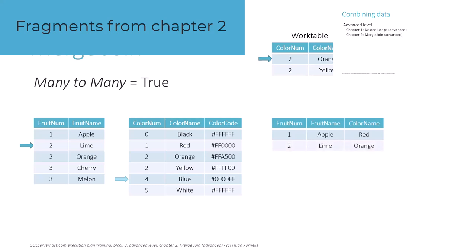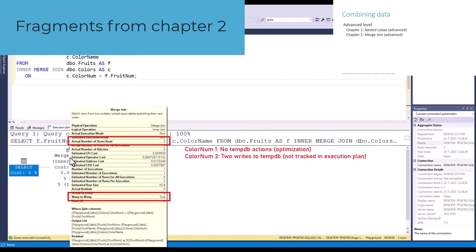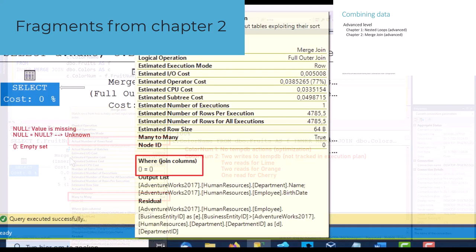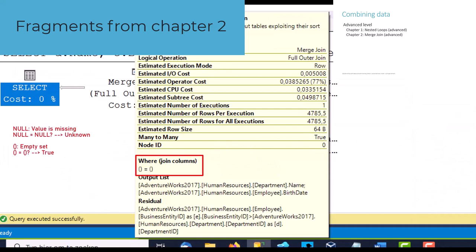After that, we show how the basic algorithm fails when there is a many-to-many relationship between the inputs and how SQL Server works around that. That workaround is not free though. We end the chapter with a look at an edge case where merge join is used to produce the Cartesian product of two inputs.